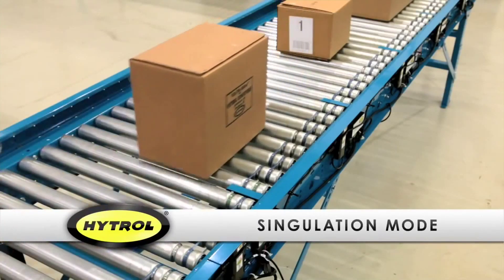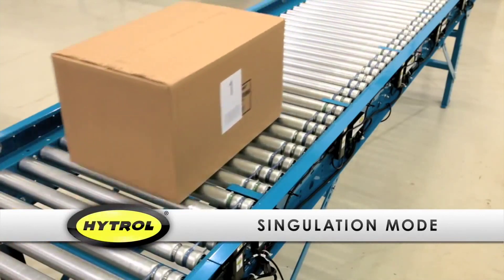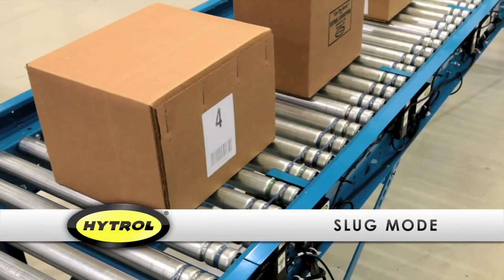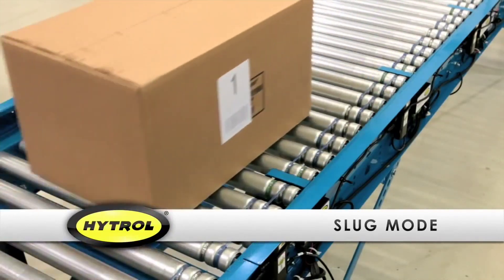Singulation Mode provides the system with better carton control by releasing each zone individually. When individual carton control is not the primary focus, Slug Mode may be used to promote dense accumulation and higher throughput.